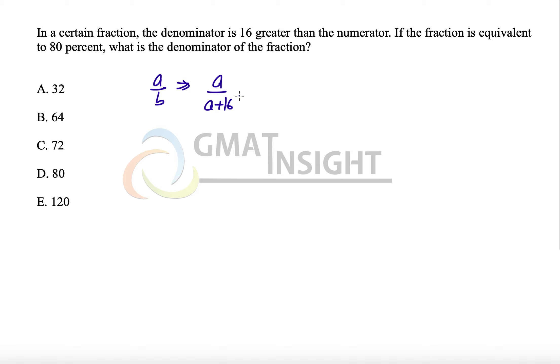If the fraction is equivalent to 80%, that means it is equal to 4 by 5. What is the denominator?